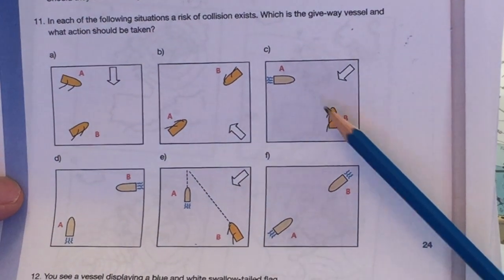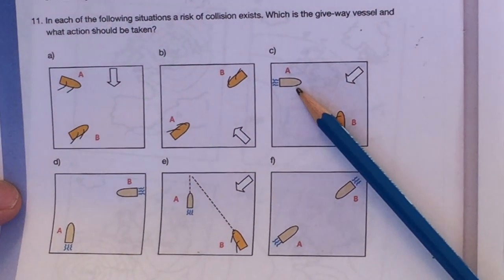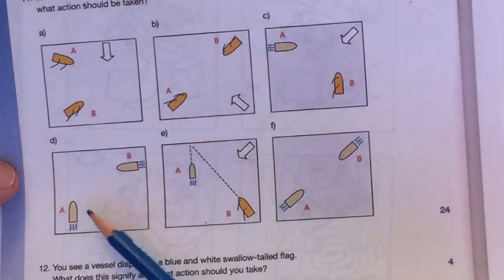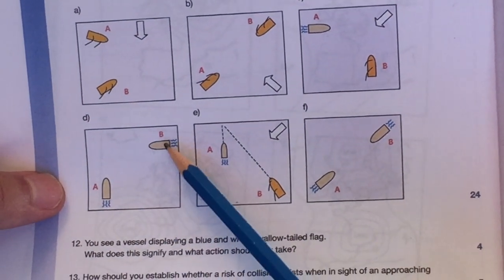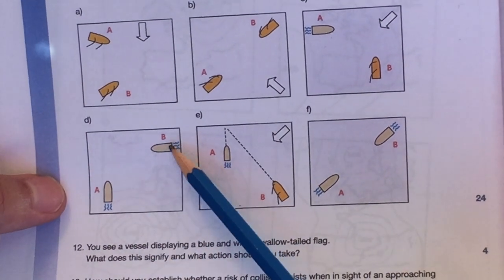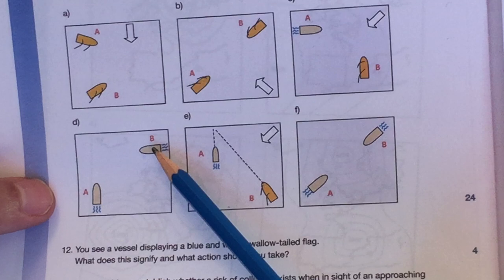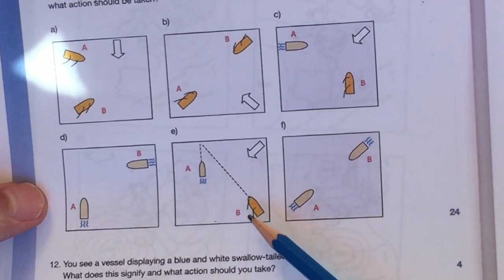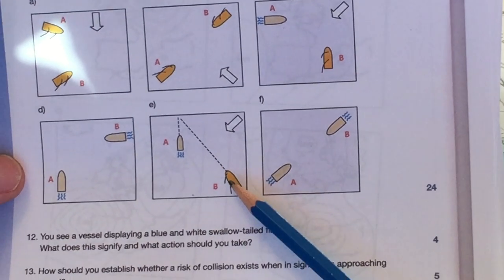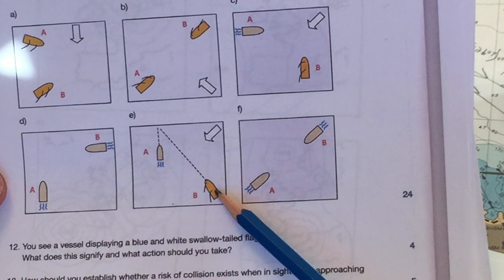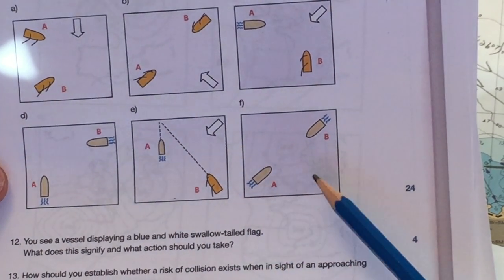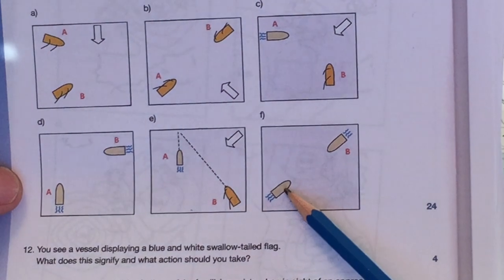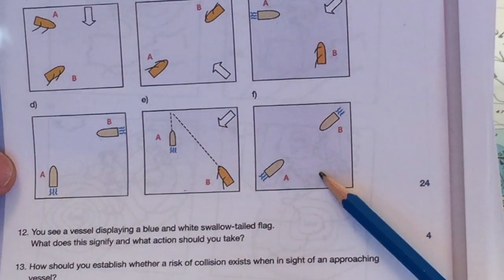But also, the sailboat happens to be to starboard of the motor yacht, not that that matters in this case, but any vessel that is to starboard of you, is the stand-on vessel. D, two motor vessels, okay, vessel B is to starboard of A, so A is the give way vessel. Okay, and E, you have a vessel overtaking another vessel, and it doesn't matter that this is a sailing, a sailboat, any vessel overtaking another is the give way vessel, so this vessel has to stay clear of the vessel that's overtaking. F, two motor yachts approaching each other head-on, each simply alters course to starboard to avoid any collisions.